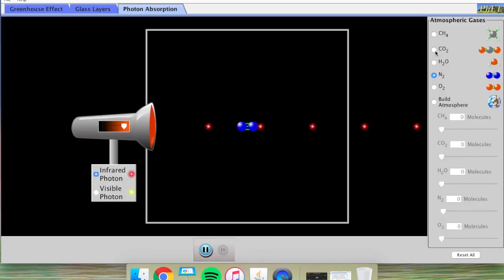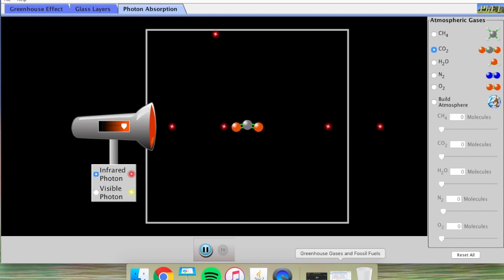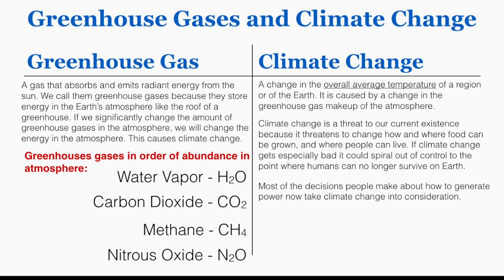The emission of greenhouse gases is a main concern in power production and will be a main focus of this unit. Going back to the lecture slides: a greenhouse gas is officially any gas that absorbs and emits radiant energy from the sun, storing energy in the Earth's atmosphere like the roof of a greenhouse. Significantly changing the amount of greenhouse gases changes the energy in the atmosphere, causing climate change. Water vapor, carbon dioxide, methane, and nitrous oxide are the four most common greenhouse gases, in order of prevalence. Climate change is a change in the overall average temperature of a region or of Earth, caused by a change in the greenhouse gas makeup of the atmosphere.